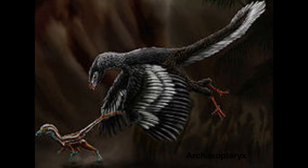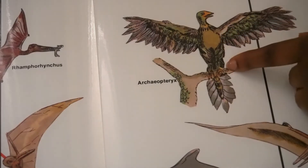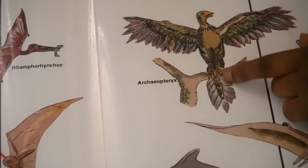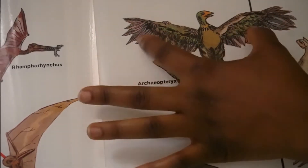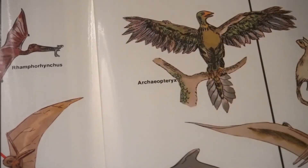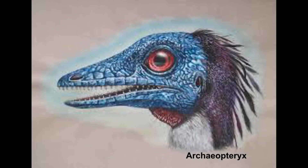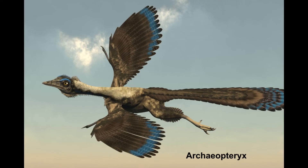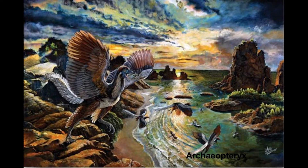Archaeopteryx was very much like a lizard covered with feathers — without the feathers, it actually does look like a lizard, but it had feathers, which made it a bird. It was about the size of a crow with a wingspan measuring two feet. On each wing were three fingers with claws, perhaps used for climbing trees. Its chest muscles were too weak for it to have been much of a flyer, and it probably glided out over the water in search of food, like the flying reptiles.